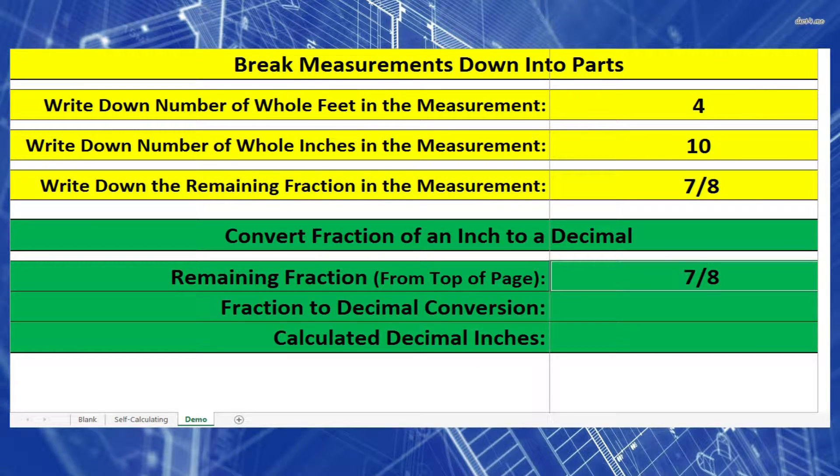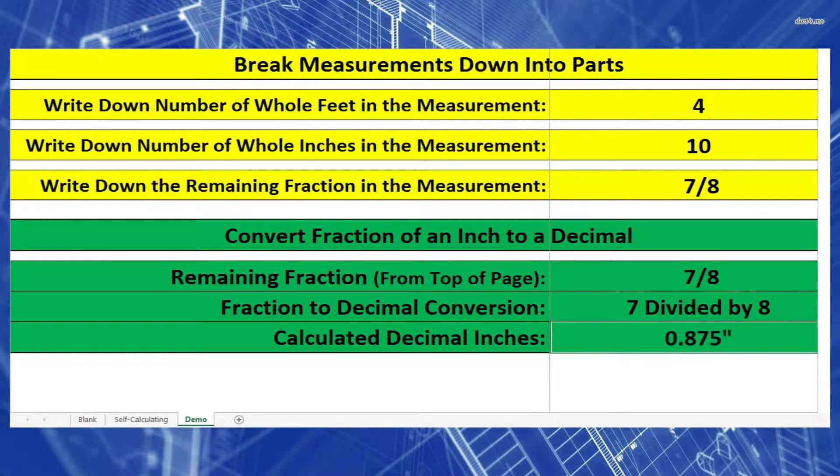Let's start with our fraction of an inch. We need to take 7 eighths of an inch and convert that into decimal inches. To do that we take the top number 7 divided by 8, the bottom number. This will give us 0.875 inches.